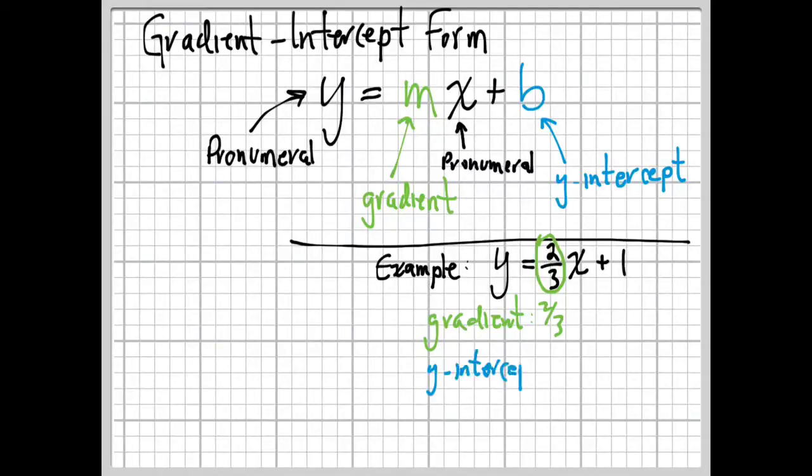We want to figure out the y-intercept. It's just as easy. It's that number on the end where the b was. In this case, it is this number here, the number one. Our y-intercept is one.